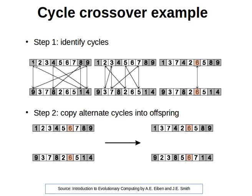We move on to the next element which is not in the cycle yet — it's element number 2. We find the corresponding element at the same position in the second parent, which is 3. We find that value in the first parent, and from there the element in the same position in the second parent is 7. We always look at the value in the second parent — we find that value in the first parent. From there we find the value at the same position in parent2, which is 5.